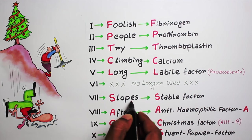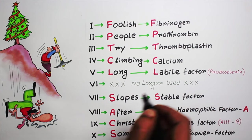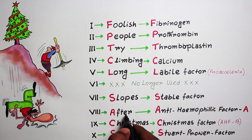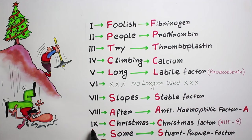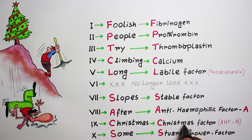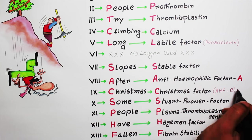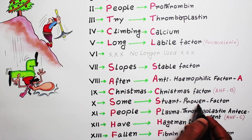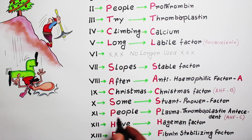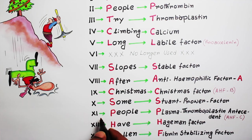Factor 7 — S for stable factor; factor 8 — A for anti-hemophilic factor A; factor 9 is the Christmas factor, which is also called anti-hemophilic factor B; and factor 10 — S for Stuart-Prower factor.